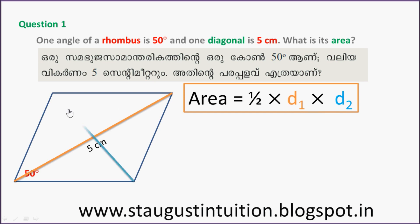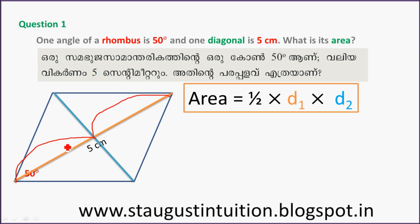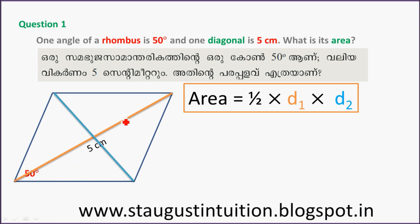Half into D1 into D2. D1 is 5 cm. The diagonals bisect each other, so one half of D1 is 2.5 cm. The angle of the rhombus is 50 degrees, so the half-angle is 25 degrees. Let's consider this angle x.